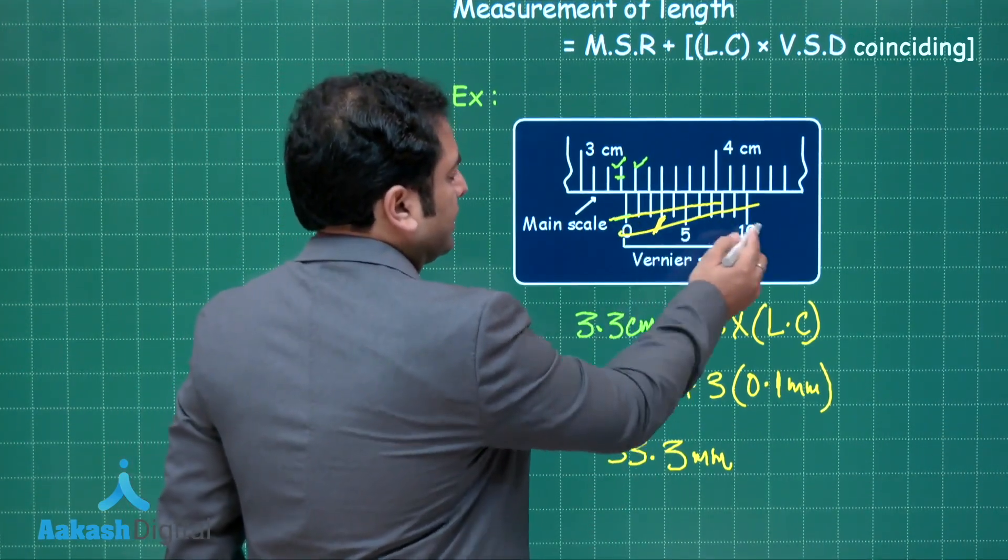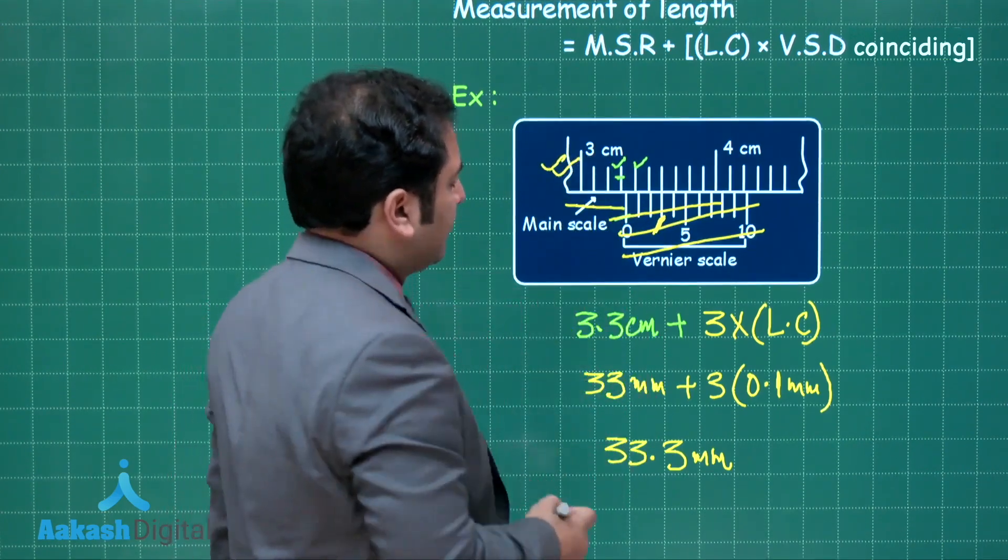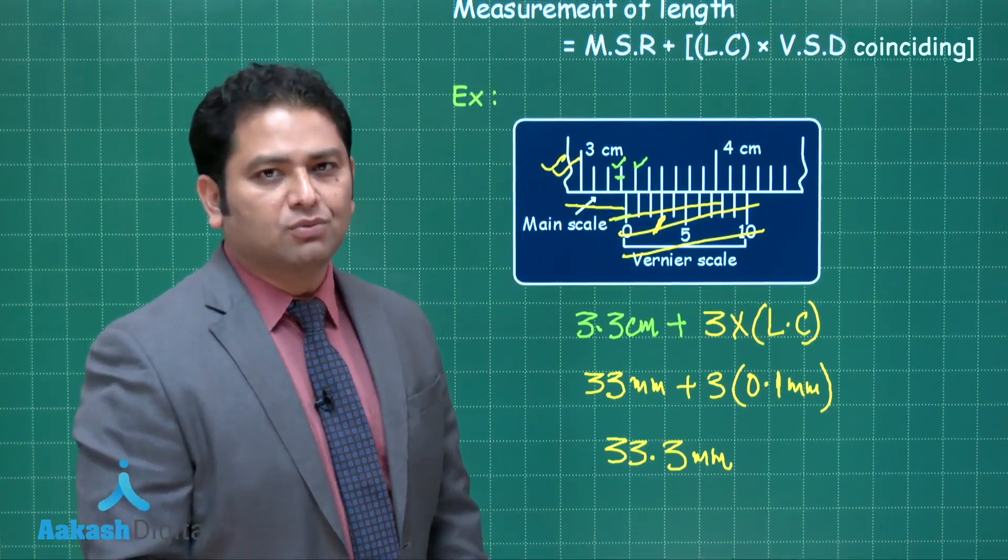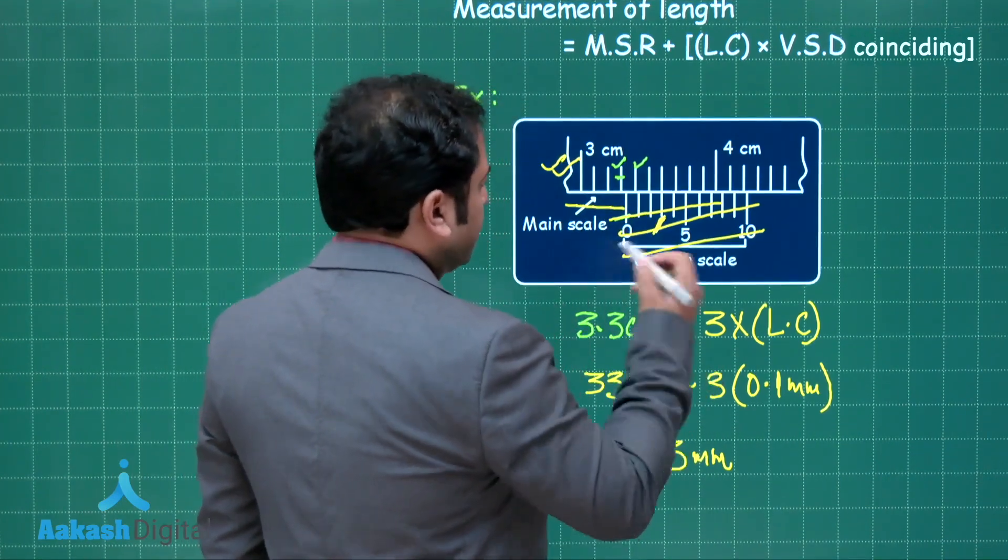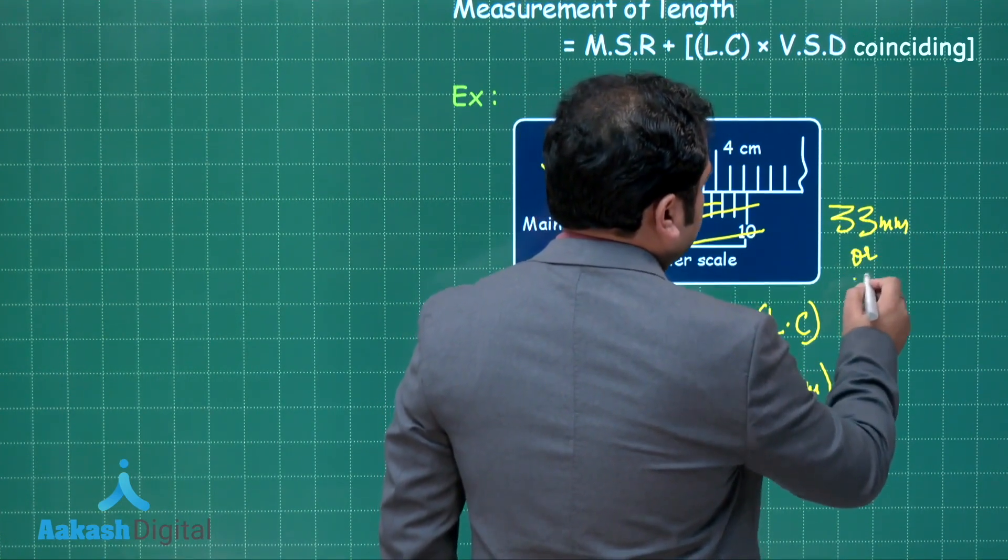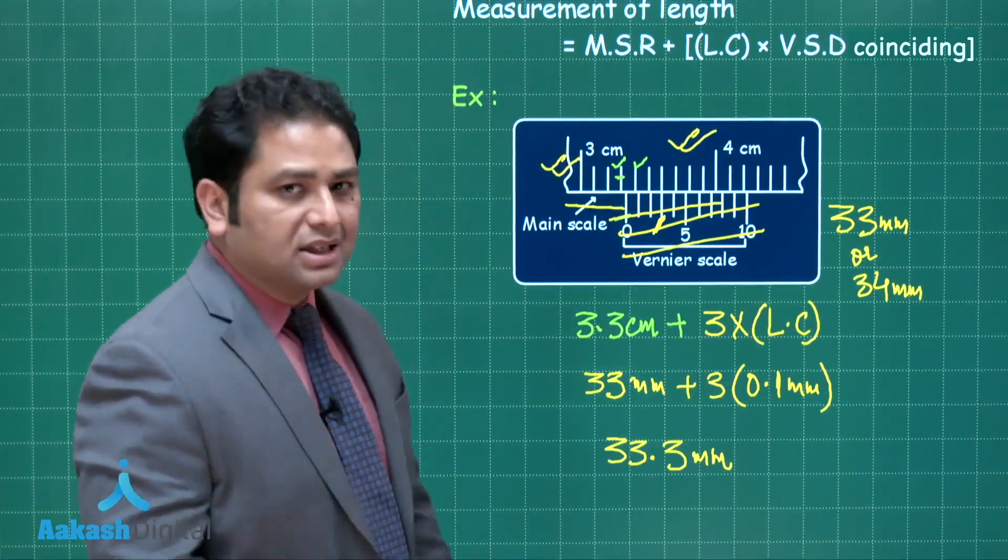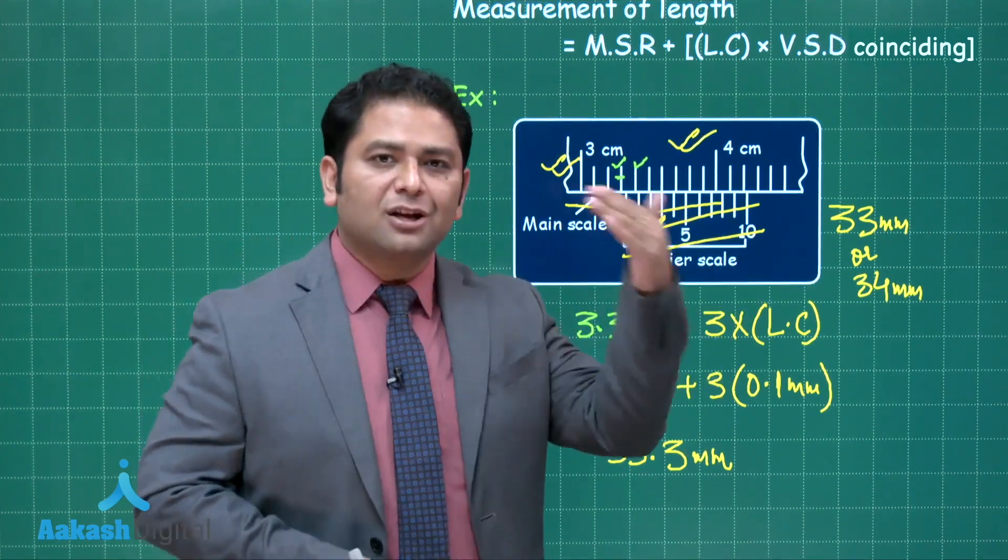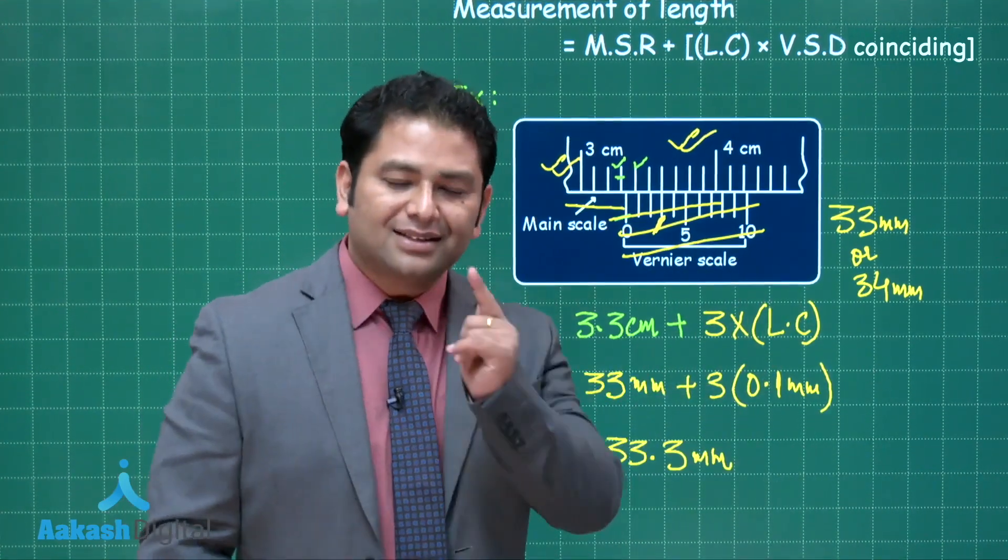Did you realize one thing? Suppose this wasn't present and you were measuring this particular length only with the help of the main scale, taking main scale as a ruler. The value reported would be only 33 millimeter, either 33 or 34 millimeter if only the main scale was used. But now, just by a clever arrangement of a slidable scale, you could increase your precision to one digit more after decimal in millimeter. That is the whole significance of Vernier caliper.